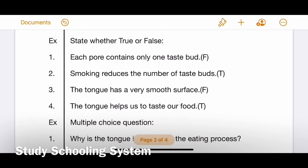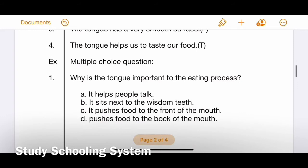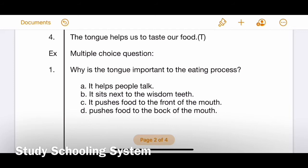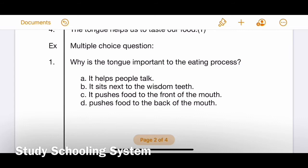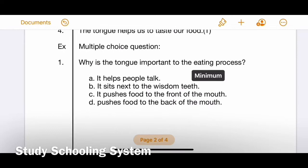Let's go to exercise multiple choice questions. You only have one: Why is the tongue important to the eating process? Part A: it helps people talk - no, that is not related to eating. Part B: it sits next to the wisdom teeth - no, that doesn't make sense. Part C: it pushes food to the front of the mouth. Part D: pushes food to the back of the mouth. Yes, that is important because that way you are swallowing. Part D is your correct answer.